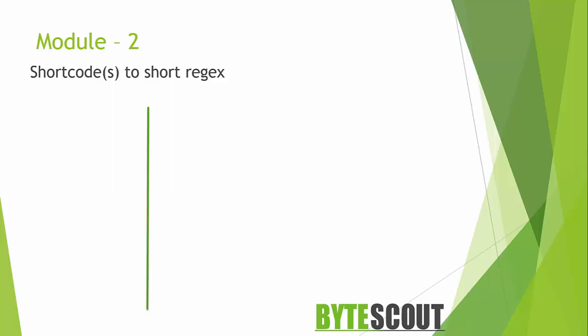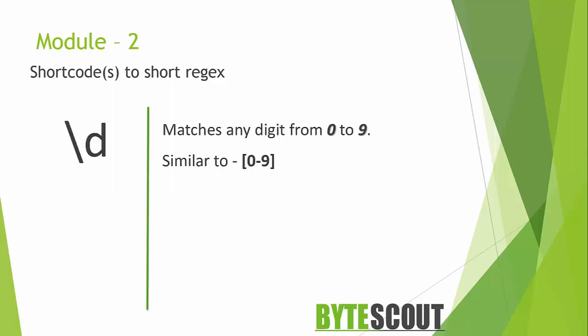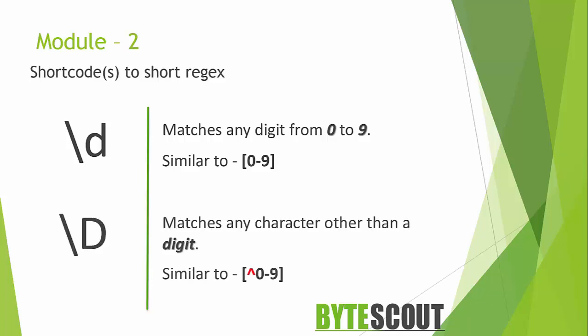The most common short code is backslash d, which is straightforward — this meta character is used to match only digits from 0 to 9. The next short code meta character is backslash capital D, which does the opposite: it matches anything that is not a digit. You can achieve the same thing by adding the negated character in a number range like this.